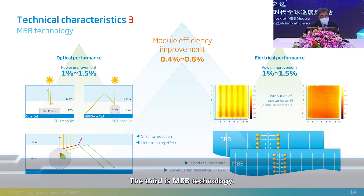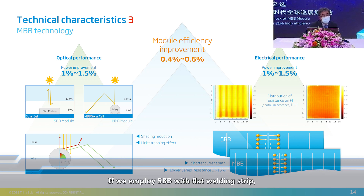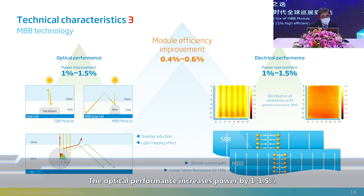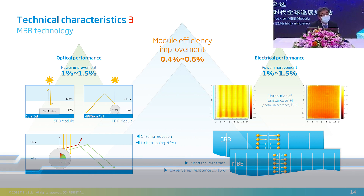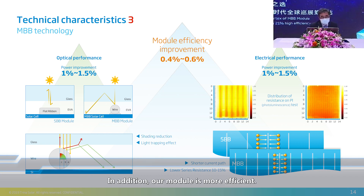The third is MBB technology, where Trina Solar leads the industry. In terms of optical properties, 75% of the light energy is reflected into the cell side, increasing light-trapping efficiency. With 5BB flat welding strip, the light-trapping rate can only reach 5%. The optical performance increases power by 1% to 1.5% and enhances module efficiency. In terms of electricity, the MBB design reduces the distance of current movement between bus bars, reducing overall resistance and improving electrical performance by 1% to 1.5%.